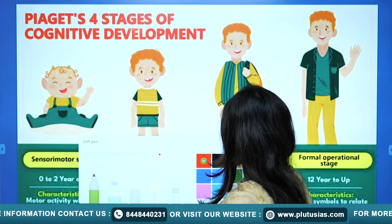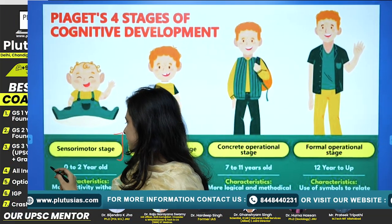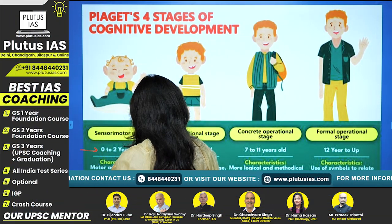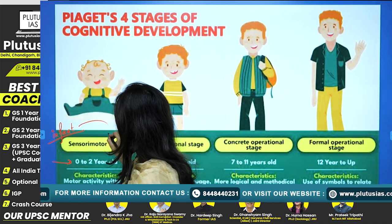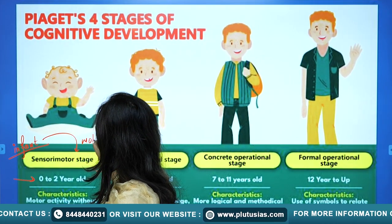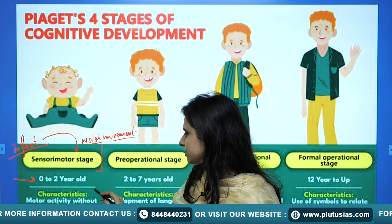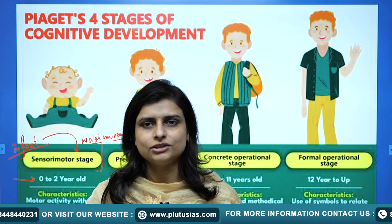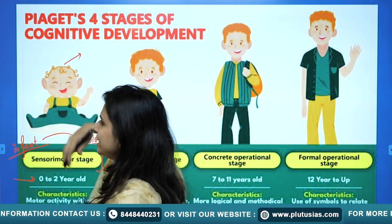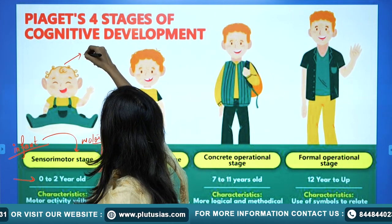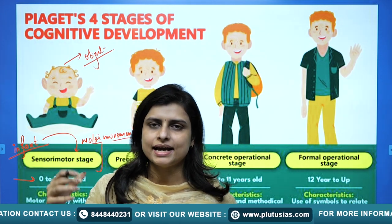The first stage is the sensory motor stage. The age for the sensory motor stage is 0 to 2 years. This is where the infant starts observing motor movement. The characteristics are motor activity without use of symbols — the infant starts using hands and gestures and actually perceives objects. The infant is very new to the world, so capturing object appearances through the eyes begins here.